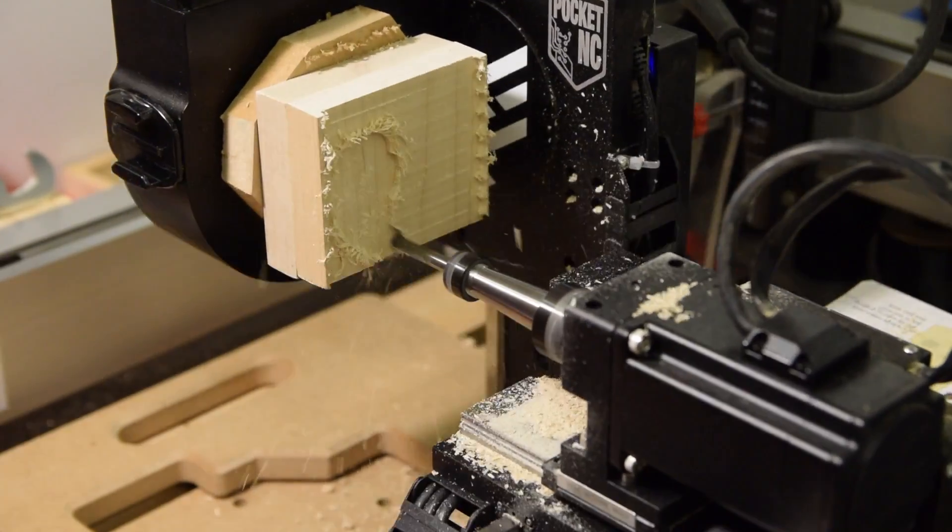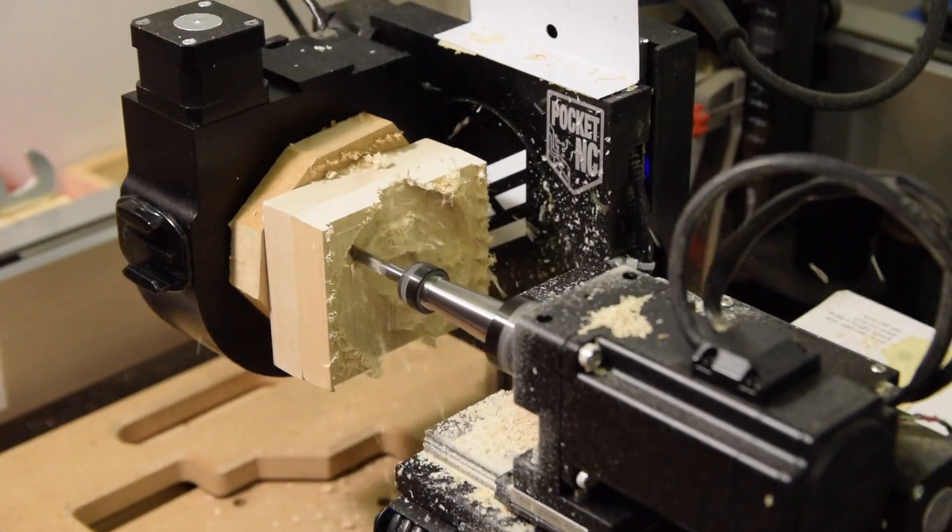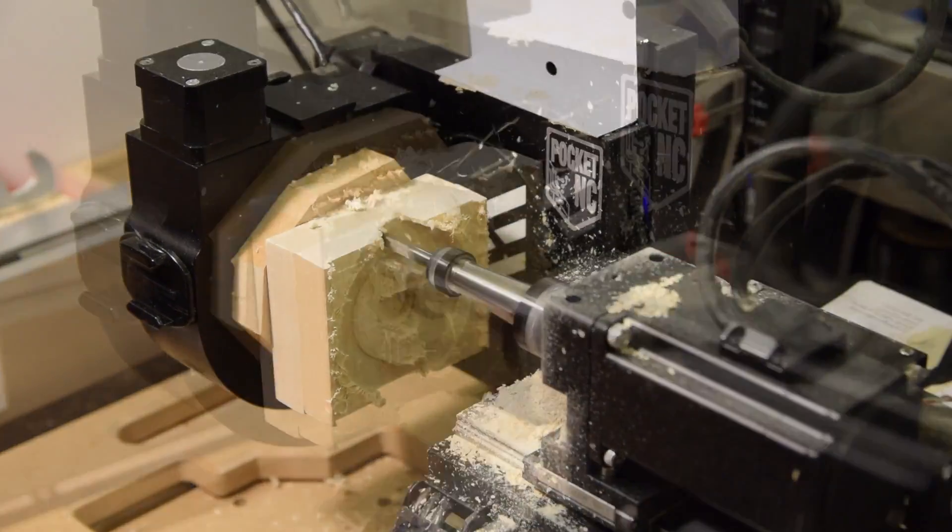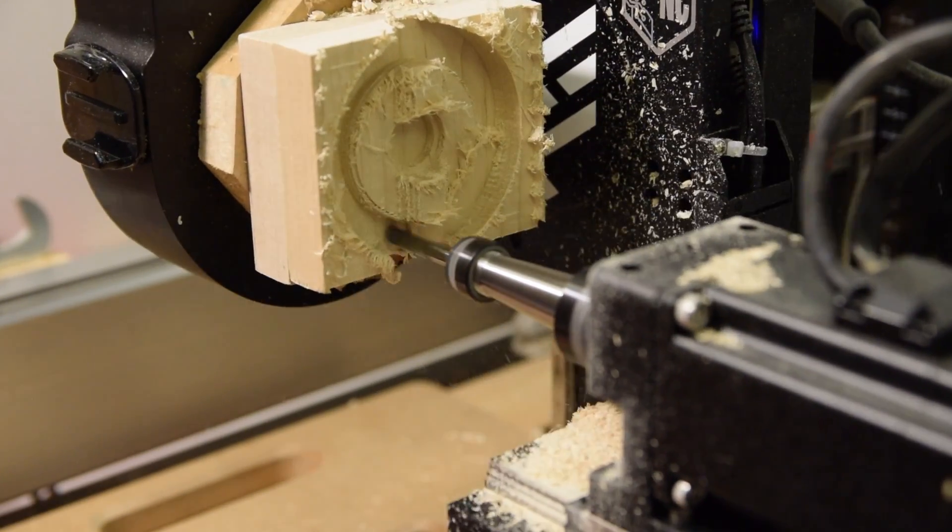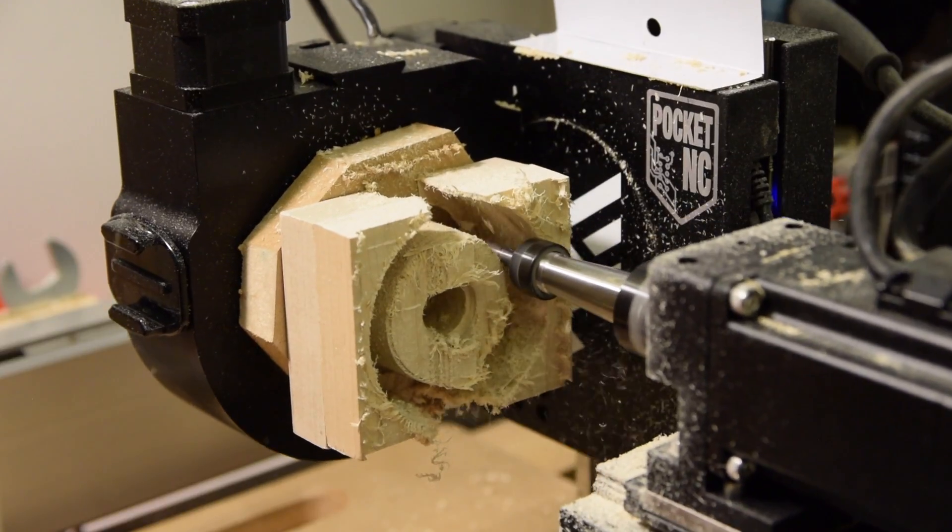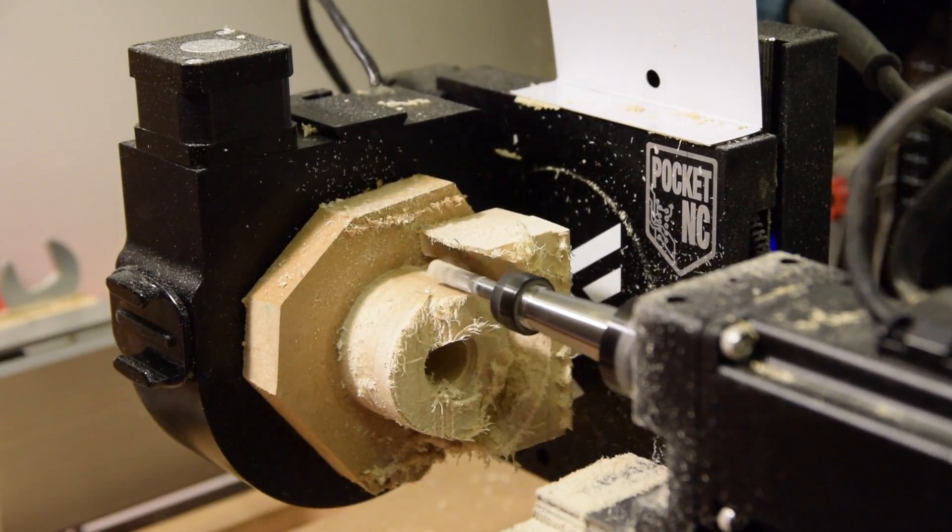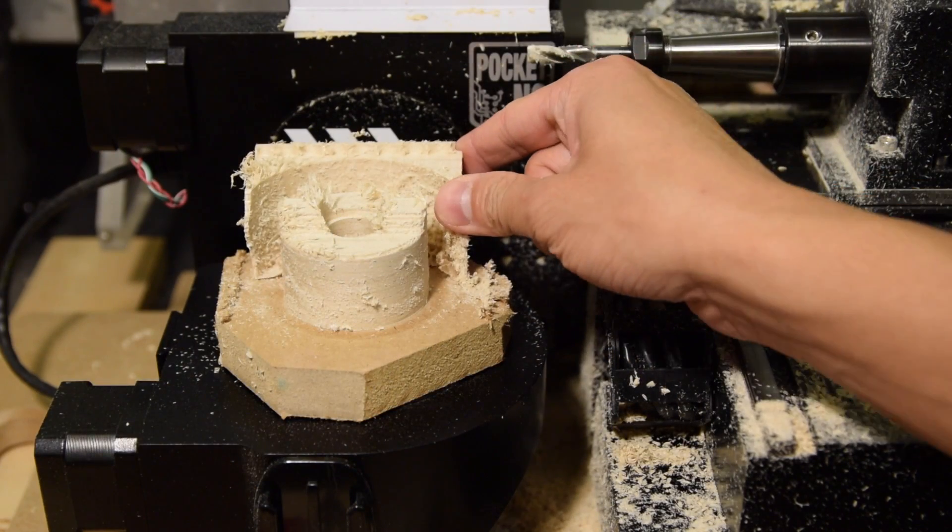Once that was out of the way, I began clearing away my stock. I kept an onion skin until the very last contouring operation. This kept the excess stock from flying off prematurely.